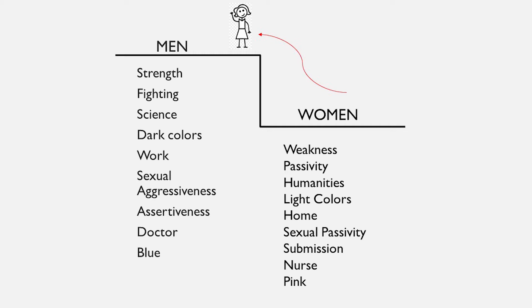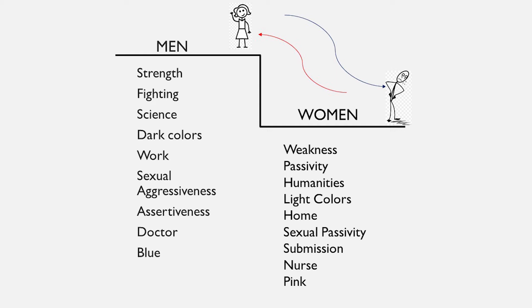We said, okay, women, it's okay if you want to come up here to the upper step. You can get a job. You can wear pants. You can cut your hair short. You can play sports, and so on. But we didn't get rid of the steps. So if a man then wants to do things that are associated with women, he gets denigrated and looked down upon. We still insult men by associating them with women's characteristics.